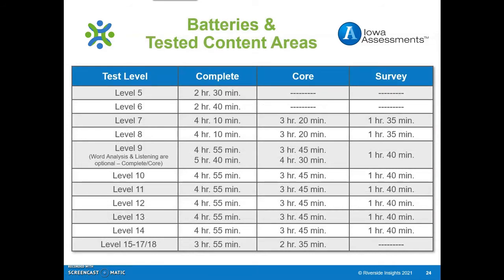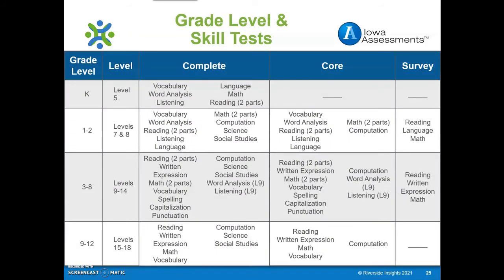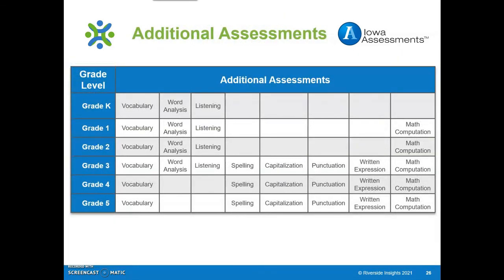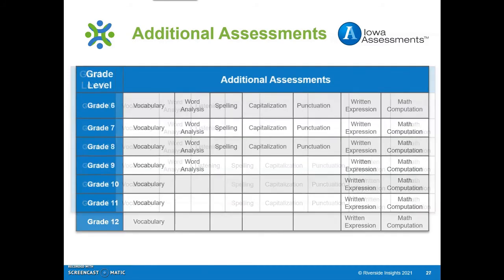Notice here the time frame in which each battery is administered per level. This chart shows the skill tests in each assessment configuration by level. This chart shows the additional subset of tests administered at the various grade levels — this is for grades kindergarten through fifth grade — and this is the chart for grades 6 through 12.